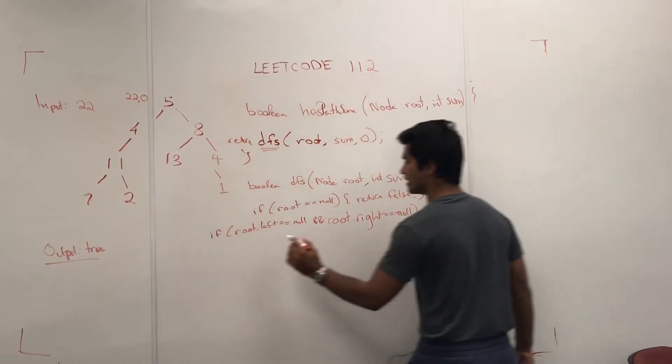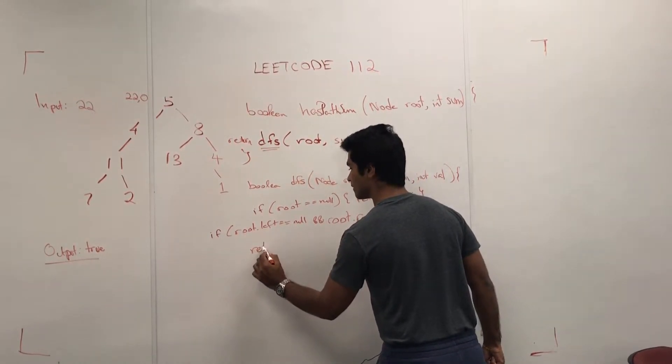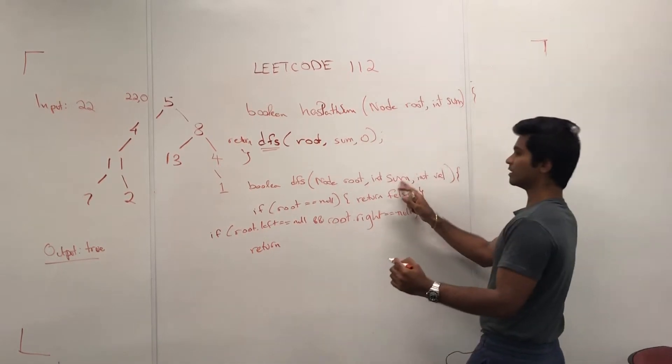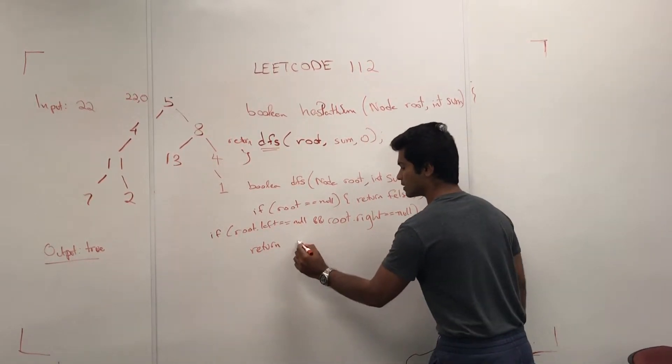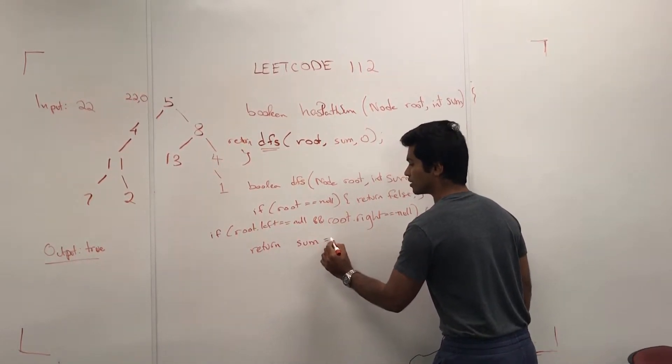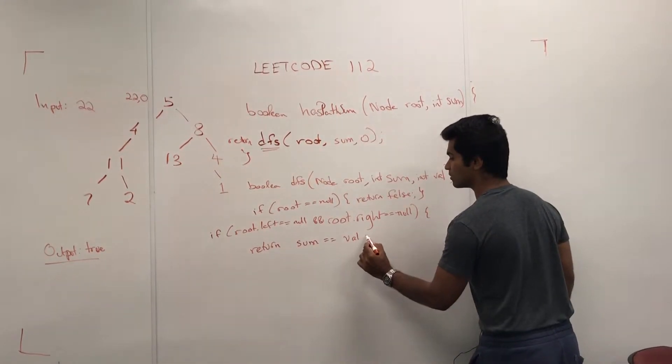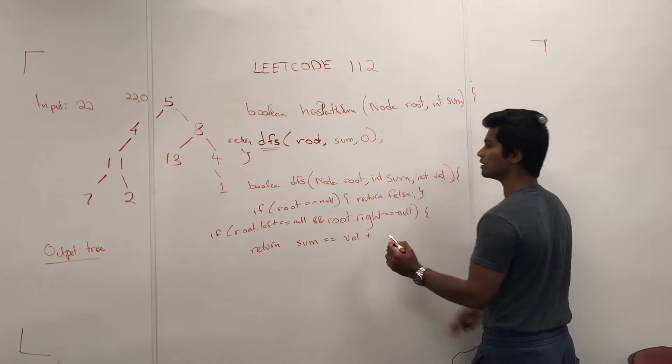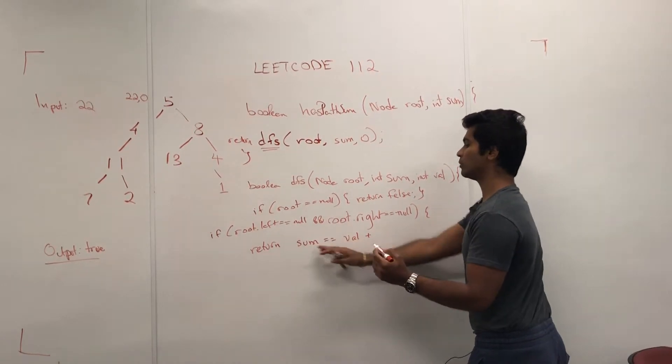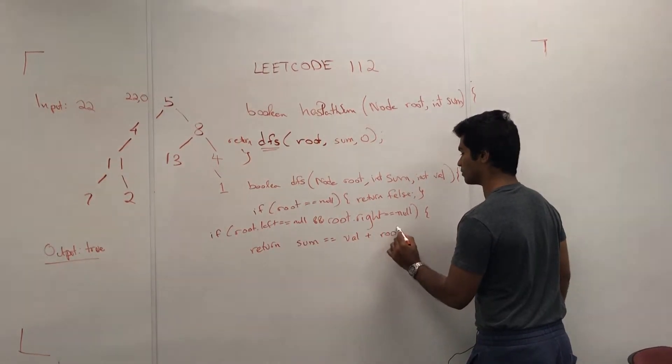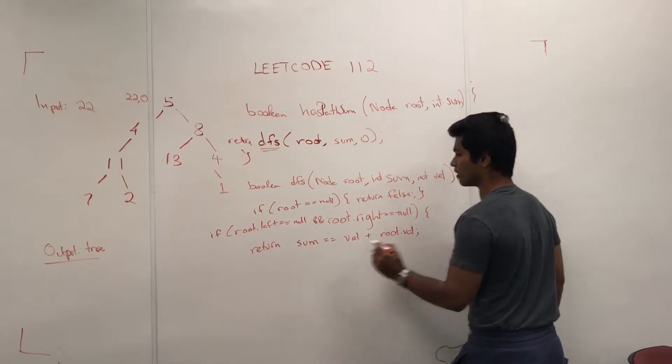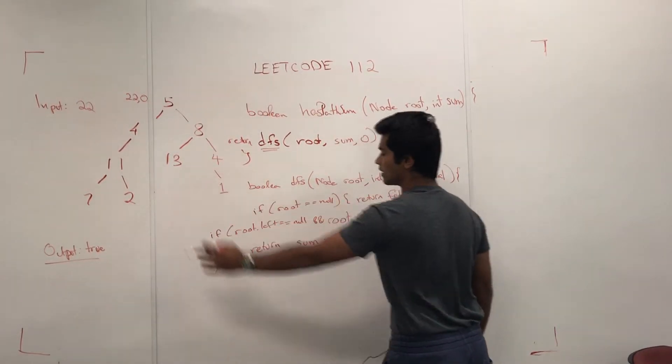Then we're going to return, we're going to check if the sum, the original sum that was there in the input, and the value that has been recursively passed, are going to equal each other if we add the root's value, which is the final part. And I'll show you what this looks like on the diagram in a second.